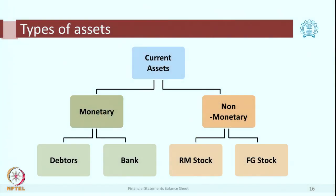Their value does not change, so they are called as monetary current assets. Non-monetary current assets are varieties of stocks or inventory. So if you have purchased raw material, it is an inventory of raw material. You will convert it into finished goods — it becomes inventory of finished goods. Some companies only deal in trading business: they purchase finished goods and sell finished goods. In that case, the stock of finished goods in their hand is a non-monetary current asset.